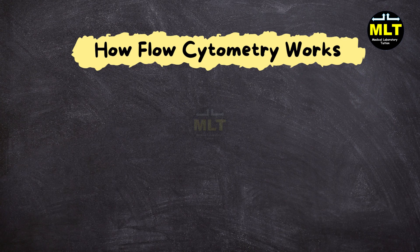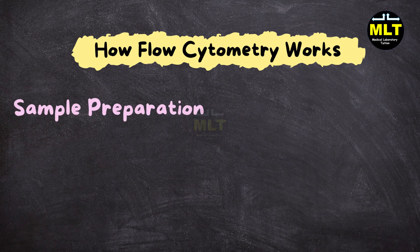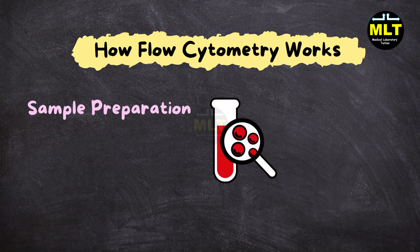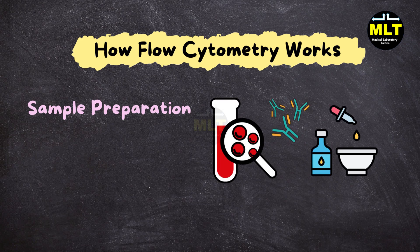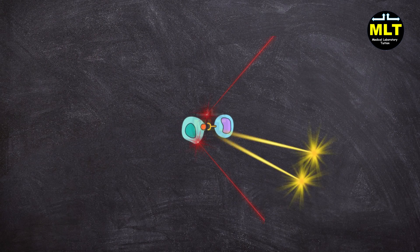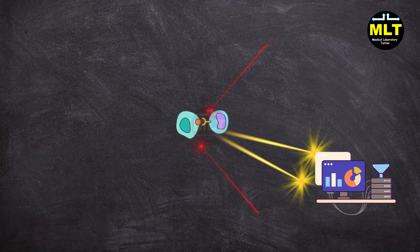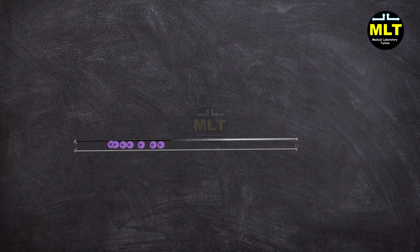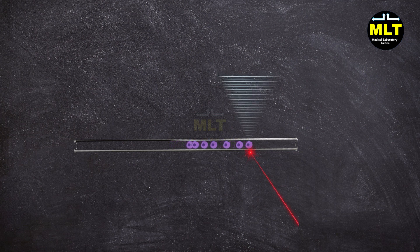How flow cytometry works. Step 1: Sample preparation. It all begins with sample preparation — cells are stained with fluorescent dyes or tagged with antibodies that target specific cell markers. When these cells pass through a laser beam, the dyes cause certain cells to emit light, helping to distinguish them from others. Step 2: Flow chamber. The sample flows into a narrow chamber where cells are aligned single file and directed toward the laser. By moving one by one, each cell is examined individually, creating a clear, detailed profile.